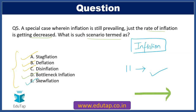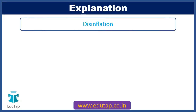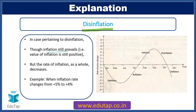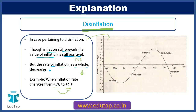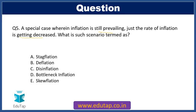Resuming back, this question pertains to disinflation. In disinflation, inflation still prevails — the value of inflation is still positive — but the rate of inflation as a whole decreases. For example, when the inflation rate changes from +5% to +4%. The graph shows inflation rising, making a plateau, and then decreasing — throughout this entire phase the value of inflation remains positive but it is decreasing, and this phase is known as the disinflating phase. So a special case where inflation is prevailing but the rate is decreasing is known as disinflation. We mark option C as our correct answer.